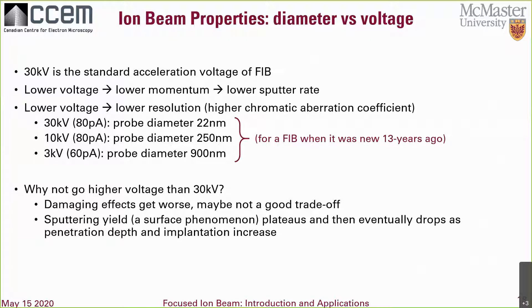Now I'm going to talk about the properties of the ion beam. Let's first talk about what happens to the beam diameter with respect to voltage. 30 kV has become the standard voltage for FIB operation, but FIBs also have a few low voltage settings. At lower voltage, the sputtering yield is lower because there's less momentum. The resolution is also poor because chromatic aberrations are high. In practice, low voltage is mostly used just as a finishing step. If low voltage is bad, why don't we go higher than 30 kV? The damage effects get worse — amorphization, ion implantation go deeper — and the sputtering yield plateaus and then drops as voltage rises.